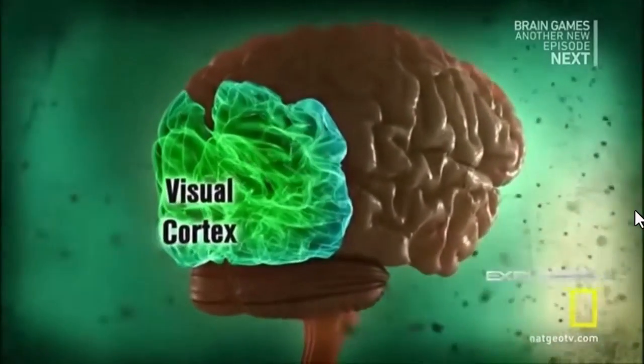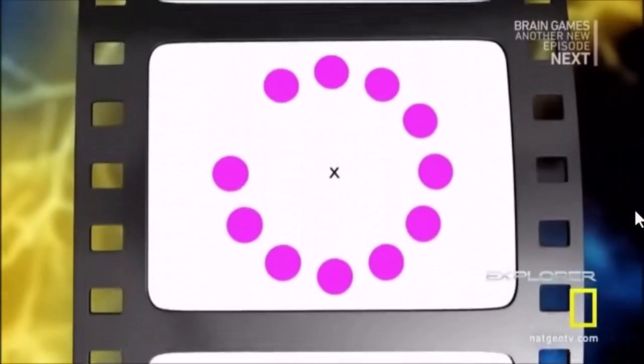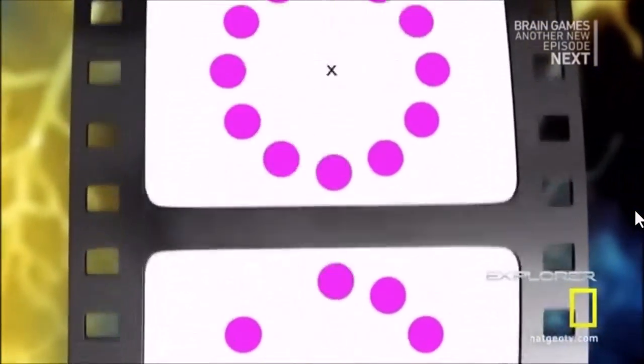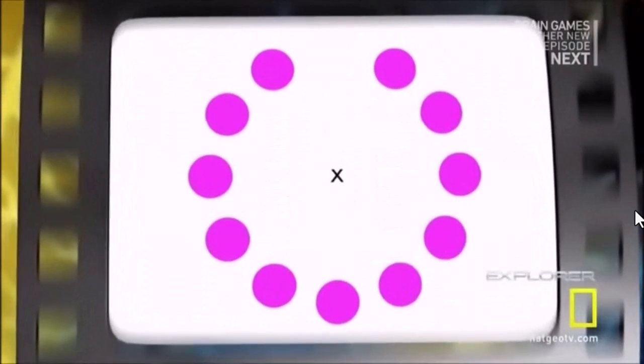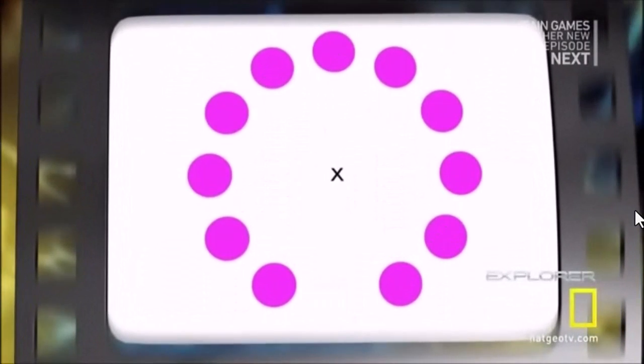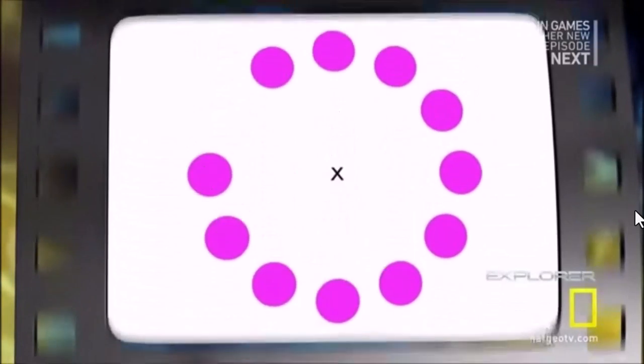As you watch the X, neurons throughout your visual cortex compare the image you're looking at from one moment to the next. Specific neurons track the changing position of objects between the images, allowing you to comprehend them as moving through space.